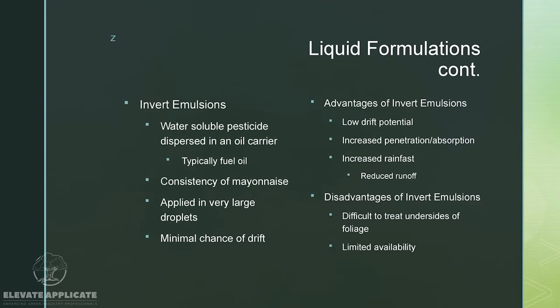Invert emulsions are water-soluble pesticides dispersed in an oil carrier — typically fuel oil. The consistency is similar to mayonnaise. They're applied in large droplets, which minimizes drift. Advantages: low drift potential, increased penetration and absorption, increased rain fastness which reduces runoff potential. Disadvantages: difficult to treat the undersides of foliage due to the consistency of the material, and they have limited availability.